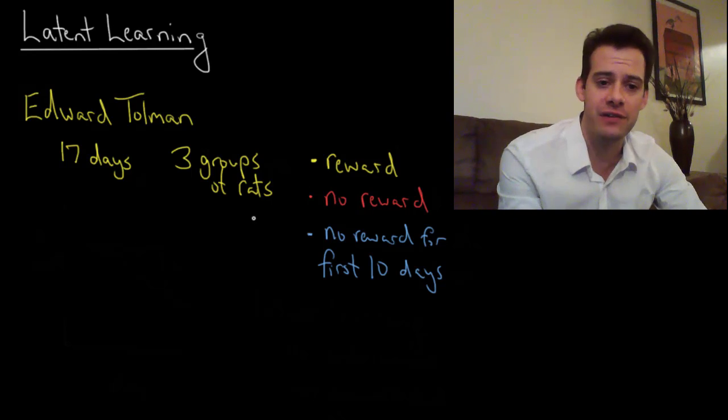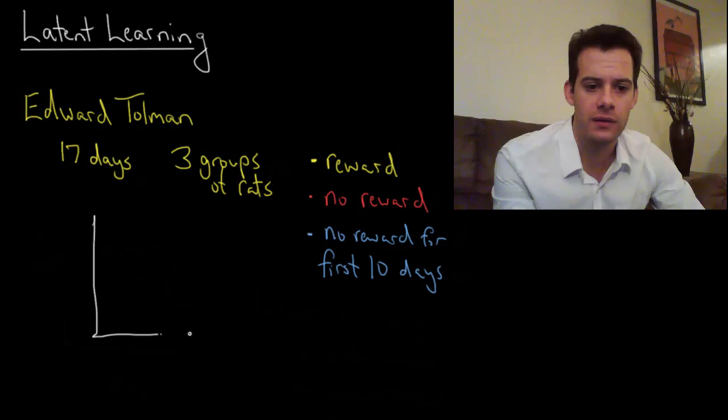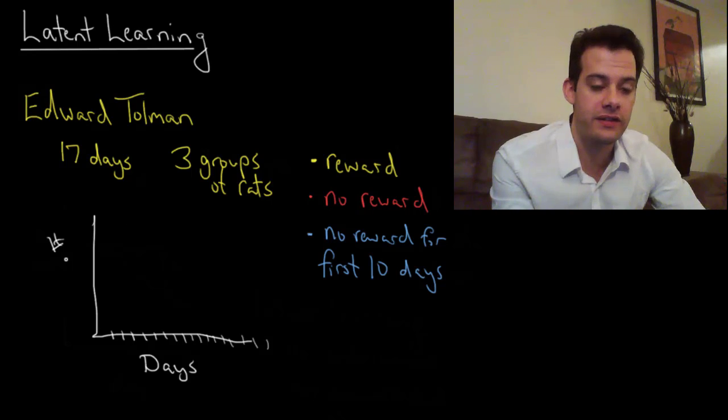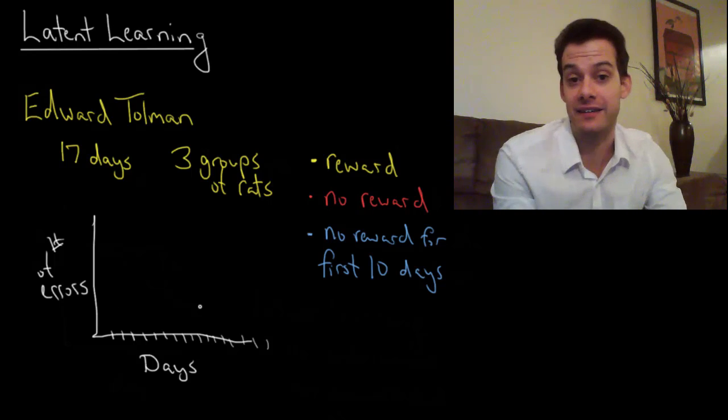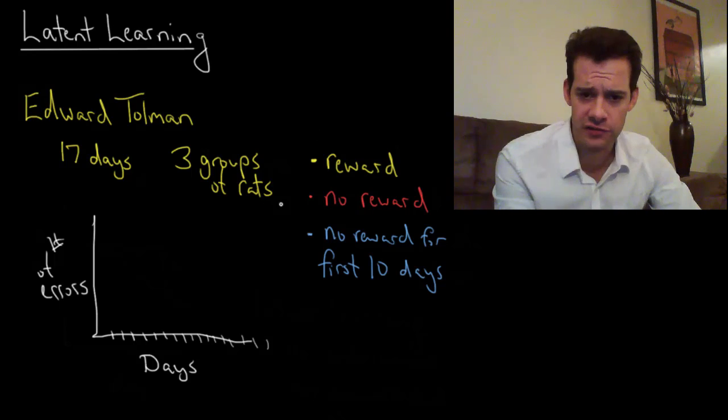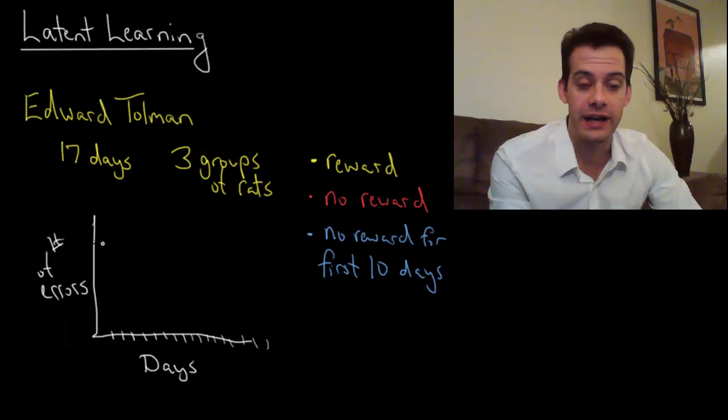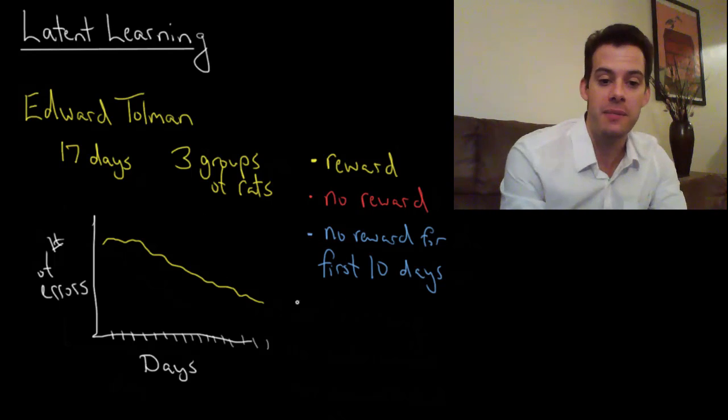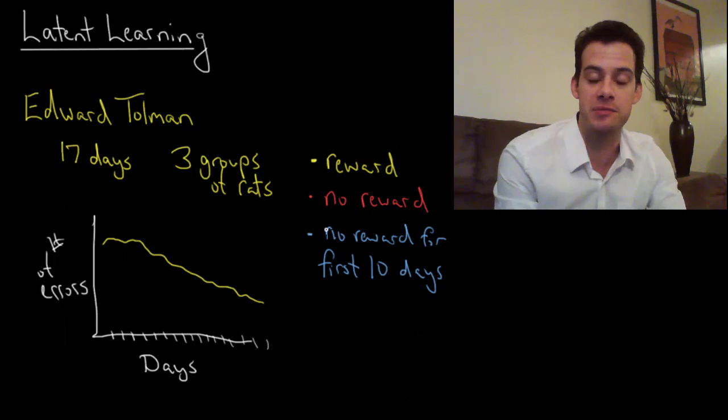If we look at the behavior of these rats, here's the days that they are performing in each maze and this shows the number of errors that they made. How many wrong turns do they make in the maze before they get to the endpoint? The first group of rats is getting a reward. Initially they make lots of errors but over time they make fewer and fewer errors. They get better at doing the maze because they're being reinforced.